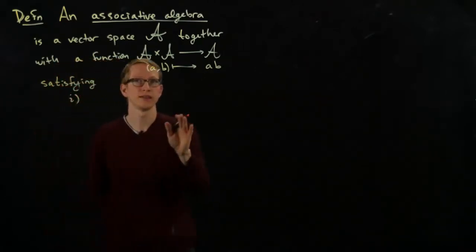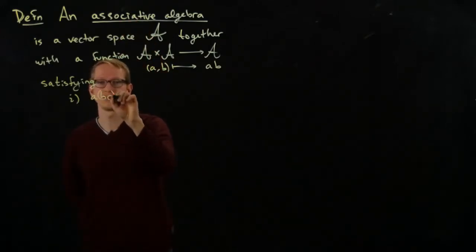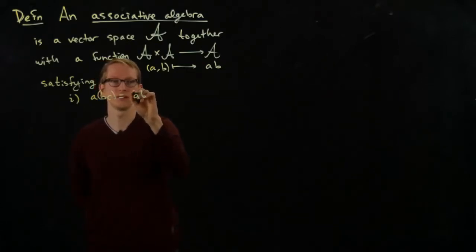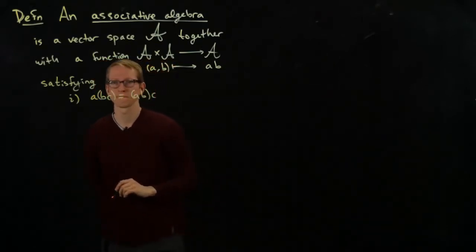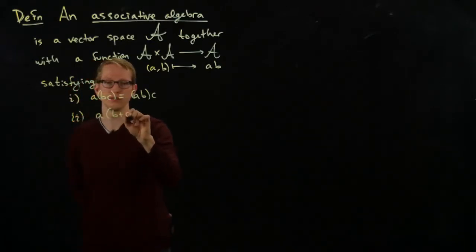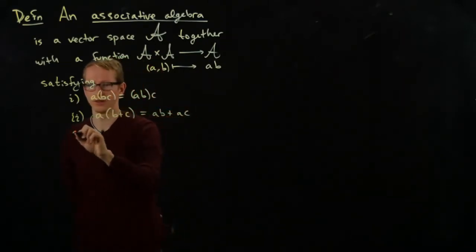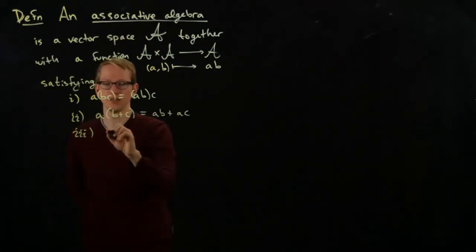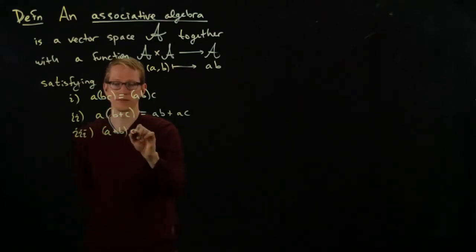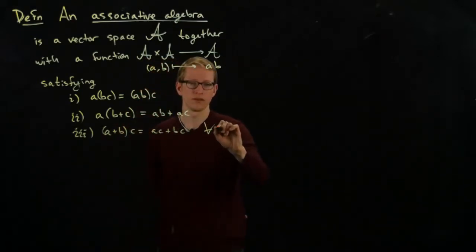Satisfying the following conditions. First, this product is associative, that's why the word associative is here. A times (B times C) equals (A times B) times C. Second, it's distributive over addition on the right, and it's also distributive over addition on the left. And this is for all A, B, C in A.